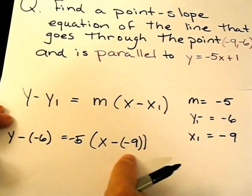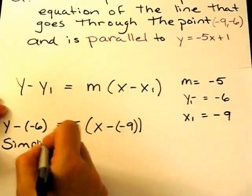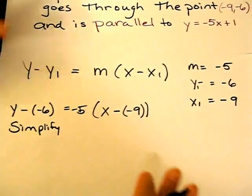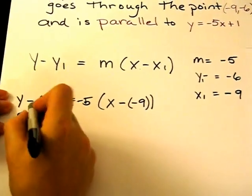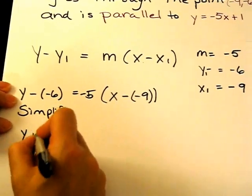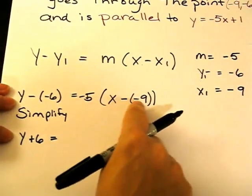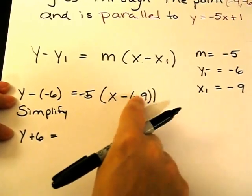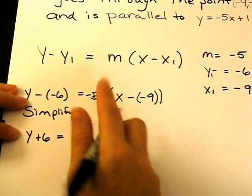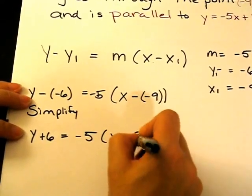Then I'm going to simplify this equation. So this negative cancels this negative. That becomes y + 6 equals. I'm going to do the same thing on this side. This negative cancels this negative. This becomes -5(x + 9).